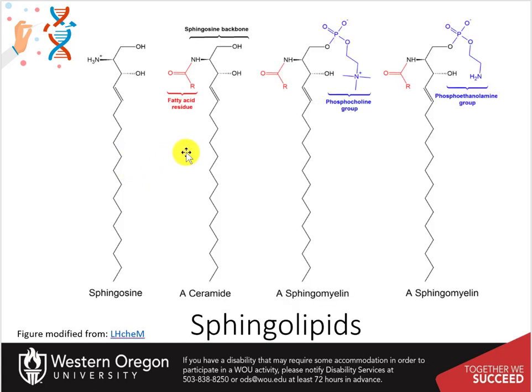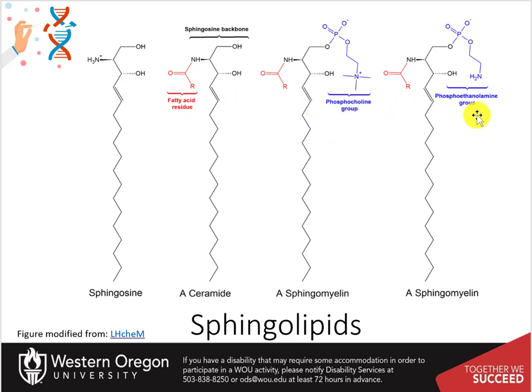Sphingosine is converted to ceramide by the addition of the fatty acid residue at the amine functional group. Note that the fatty acid tail is indicated as R herein, not drawn out. Usually the fatty acids are 12 to 18 carbons in length. Sphingosine and ceramide are the simplest sphingosine-derived lipids incorporated into the plasma membrane. Sphingolipids can be further modified to phospholipids by the addition of phosphocholine and phosphoethanolamine groups. Phosphorylated sphingosine derivatives are called sphingomyelin.